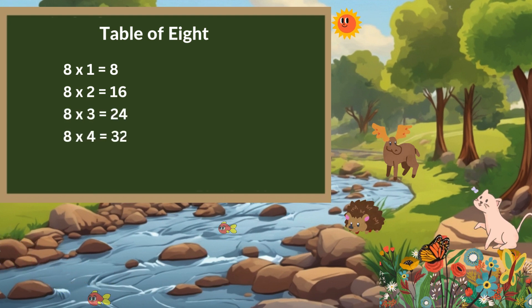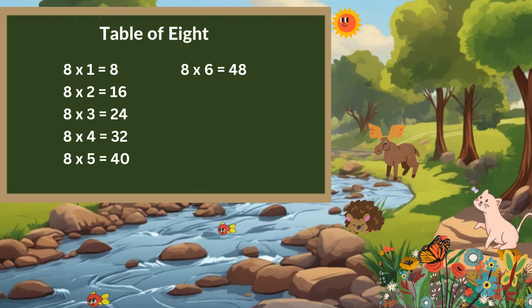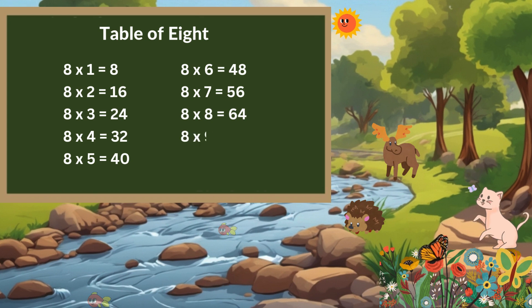8 times 4 is 32. 8 times 5 is 40. 8 times 6 is 48. 8 times 7 is 56. 8 times 8 is 64. 8 times 9 is 72. 8 times 10 is 80.